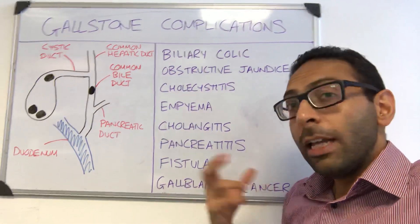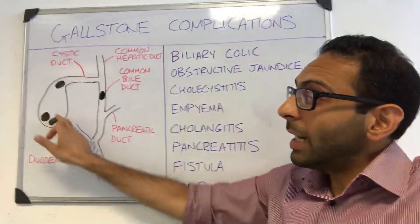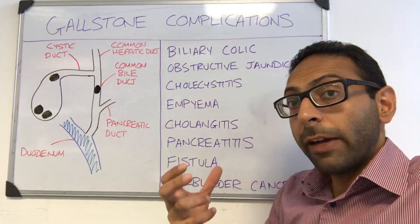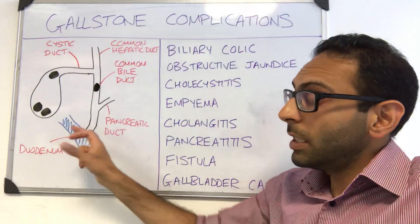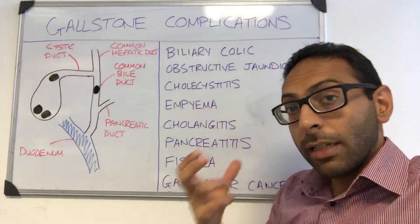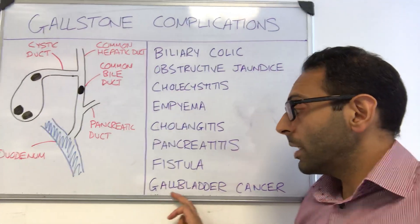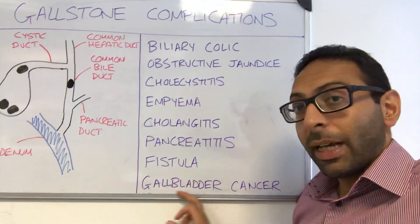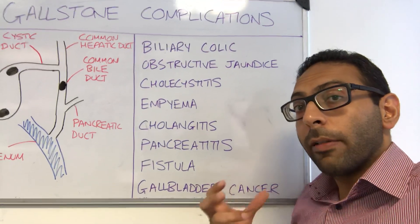Fistulas can rarely form between the gallbladder and the duodenum — perhaps in a really severe infection — so stones can move straight into the duodenum, causing things like gallstone ileus. And there is also a link between gallstones and gallbladder cancer, although that is very rare.